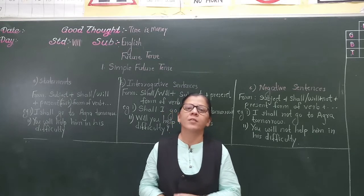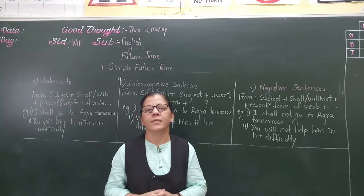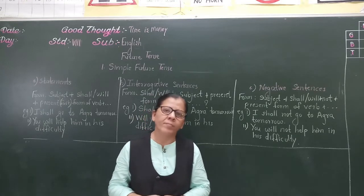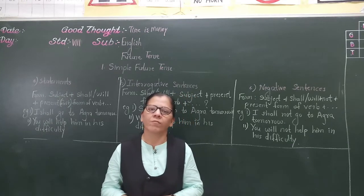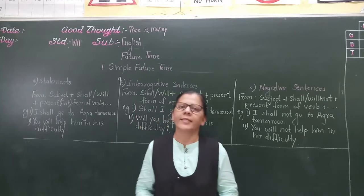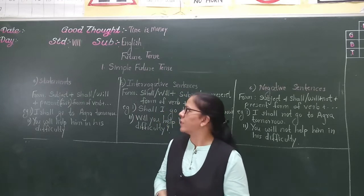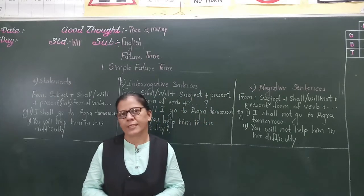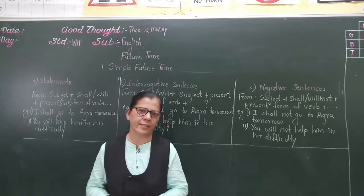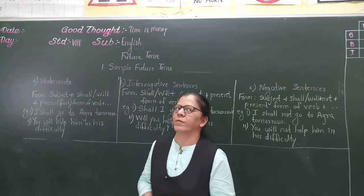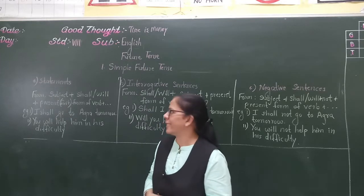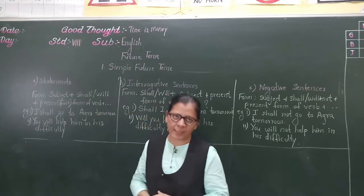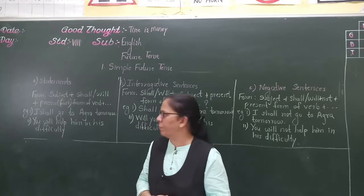Simple future tense is used to say or predict that something will happen very soon or later. It is formed by adding 'shall' or 'will' to the root verb. Now let us see the forms of simple future tense in statements, interrogative sentences, and negative sentences. The form of simple future in a statement is: subject plus shall or will plus the present, that is the first form of the verb.